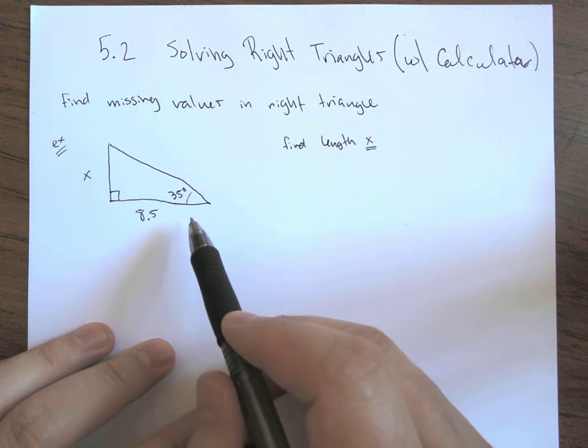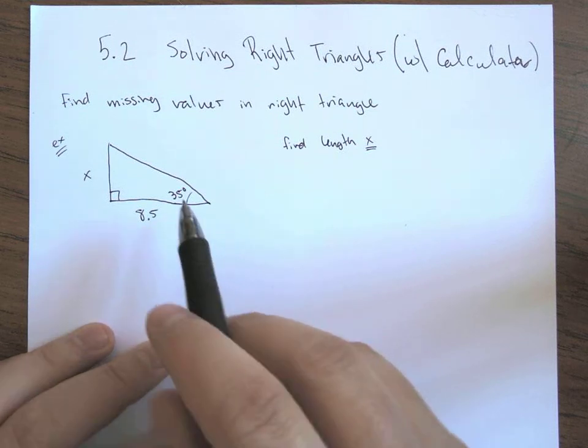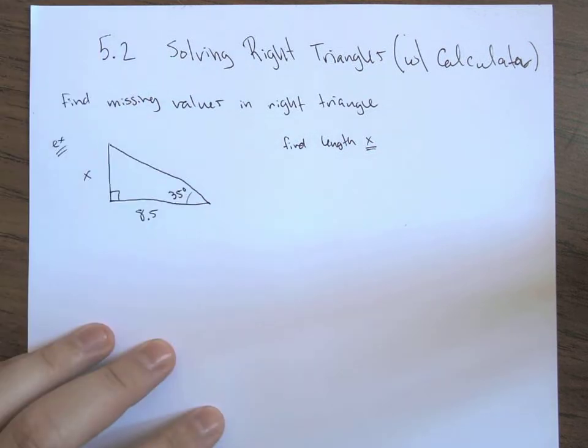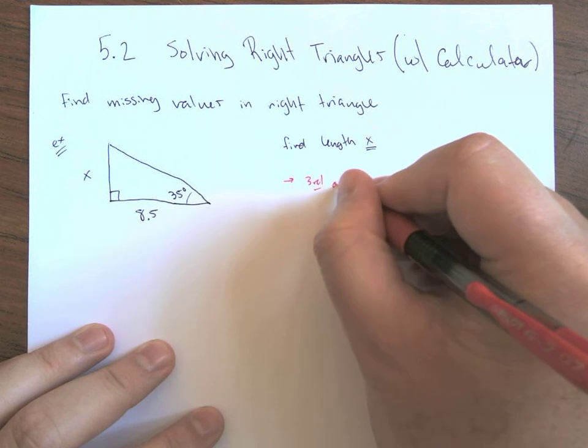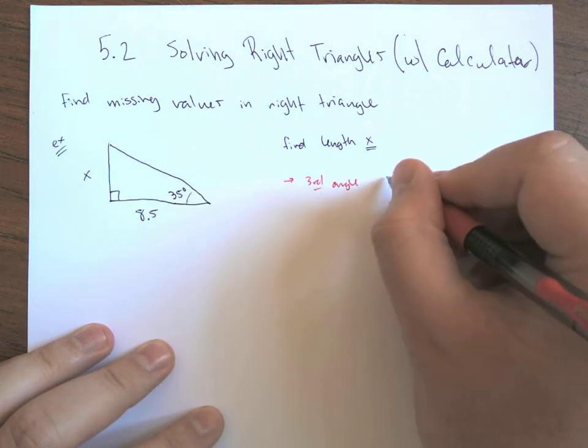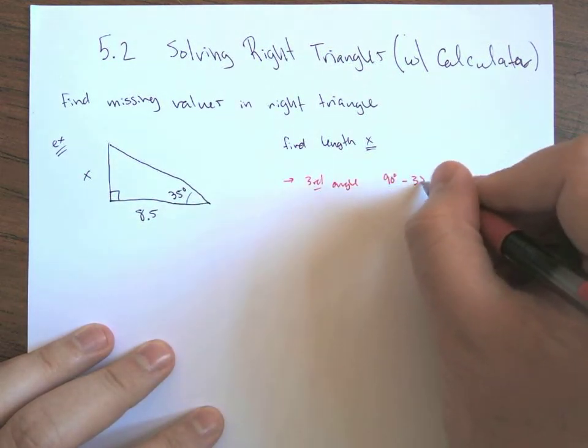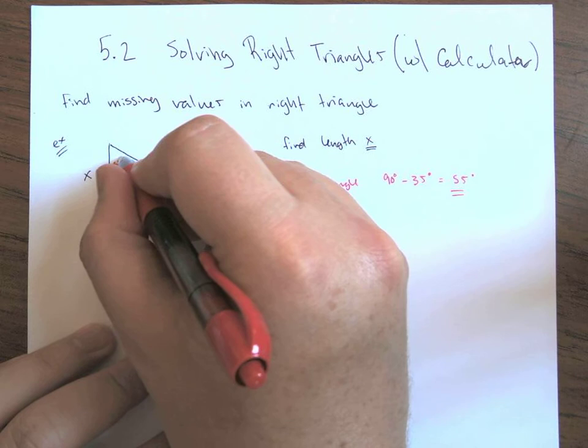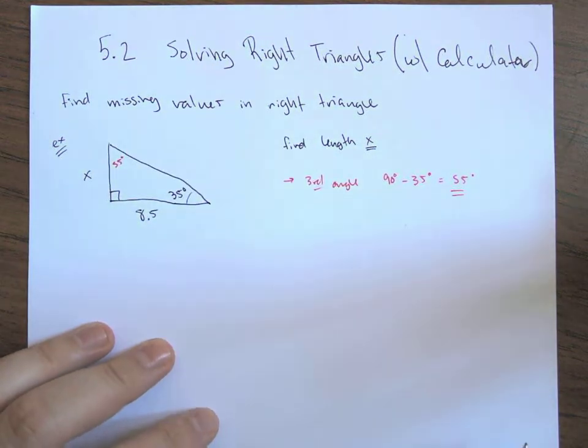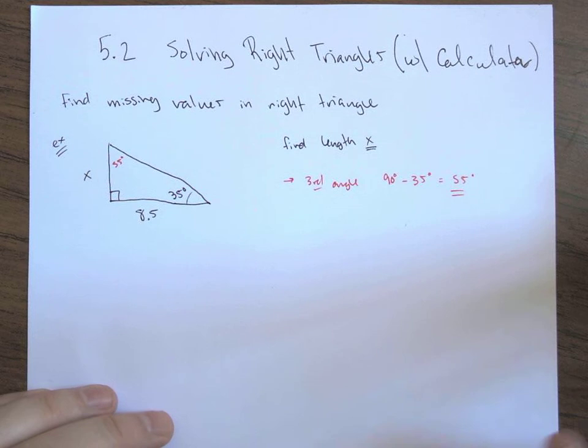So this is Pythagorean-ish, right? We have kind of one of these lengths, but to do the Pythagorean theorem, we really need two of the three, and then we can find the third. We've only got one. We do have one piece of information that we didn't have in those Pythagorean theorem problems, which is we do know one of the angles. It's not necessarily super helpful for this problem, but the third angle should be 90 degrees minus this 35 would be 55 degrees.